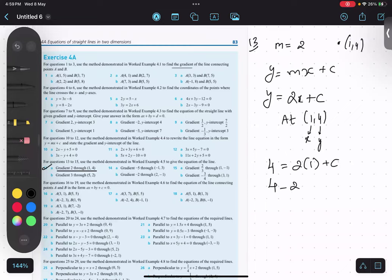So four minus two equals to c, two equals to c. So I got the c value.